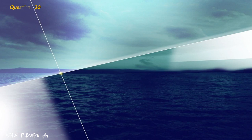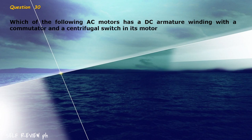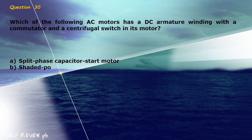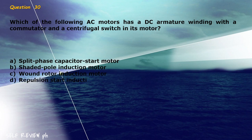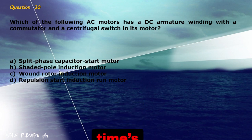Question 30: Which of the following AC motors has a DC armature winding with a commutator and a centrifugal switch in its motor? A) split phase capacitor start motor, B) shaded pole induction motor, C) wound rotor induction motor, D) repulsion start induction run motor. The correct answer is letter D, repulsion start induction run motor.